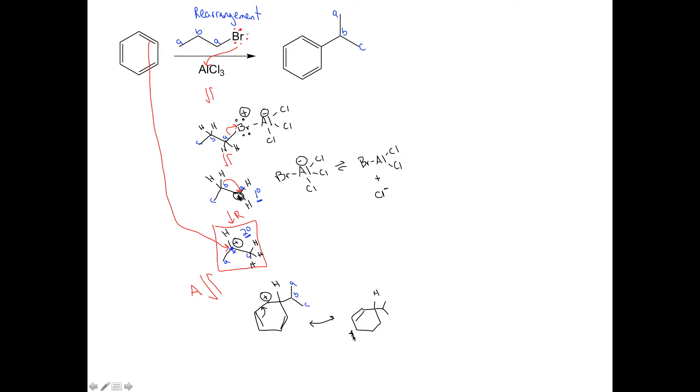We can move our double bond here, which puts our positive charge there. So there's our first resonance structure. Or we can move that double bond over there to draw our next resonance structure.